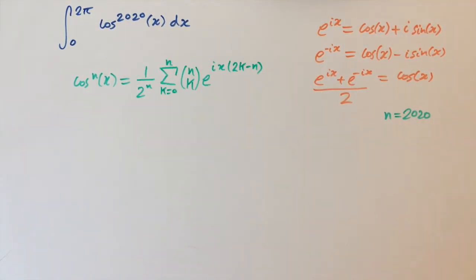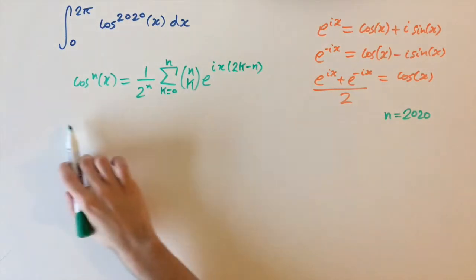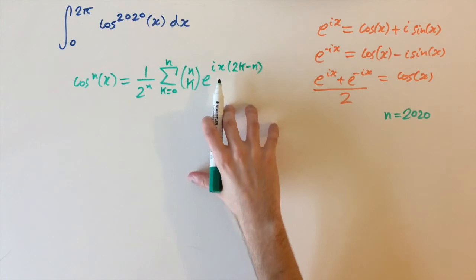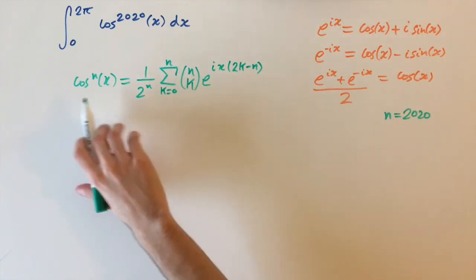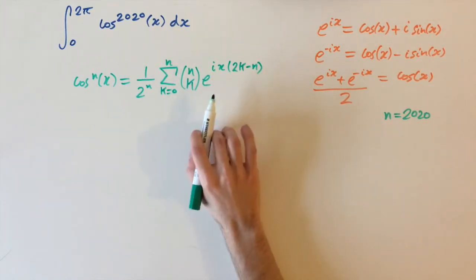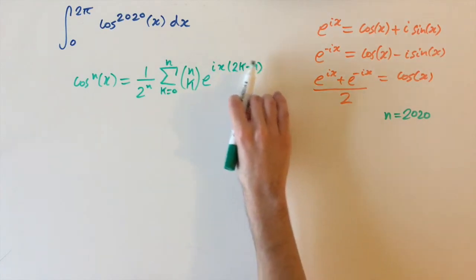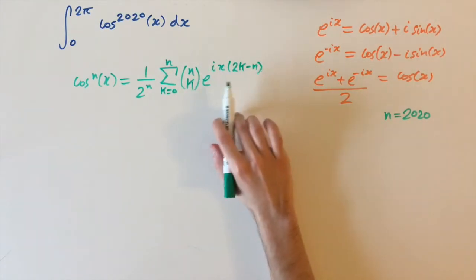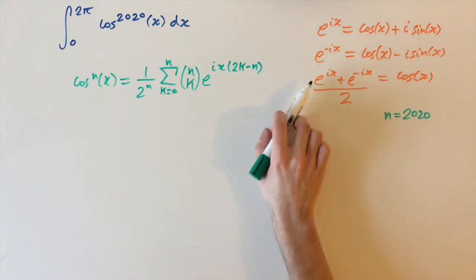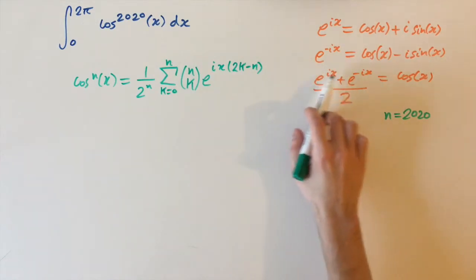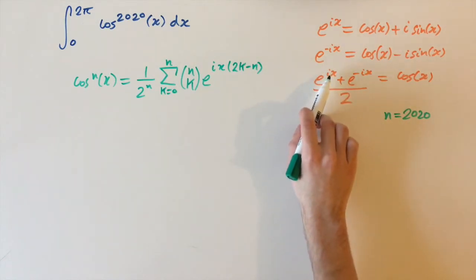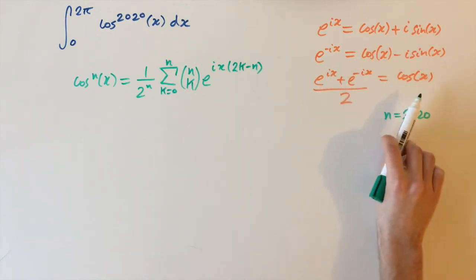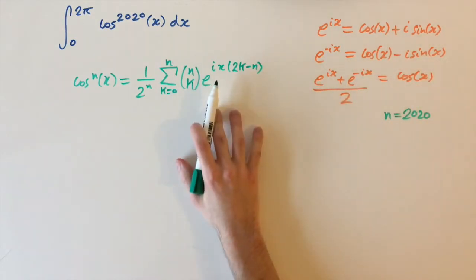We've shown that cosine to the power of n equals this function — a sum of complex numbers. We want to get it into something we can integrate, and the way to do that is to get it back into sums of cosines using Euler's formula again, expressing it as cosines of different powers.